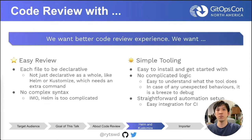So we want a better code review experience after all. It needs to be easy to review. Files should be declarative — just like simple Kubernetes YAML specs — but still provide some sort of code reuse. The syntax must be simple. Tooling also needs to be simple: easy to install, no complicated logic when used, and easily integrated with CI and any automation setup.